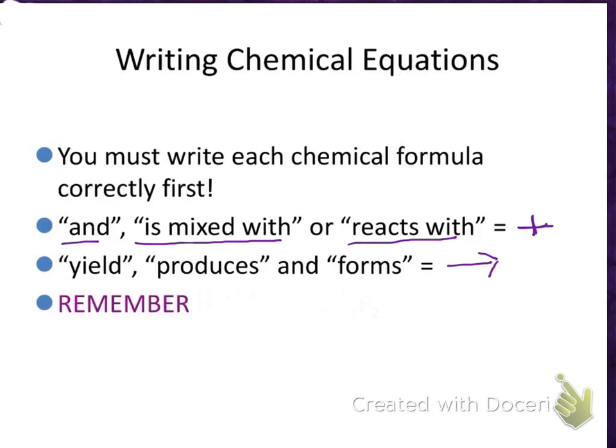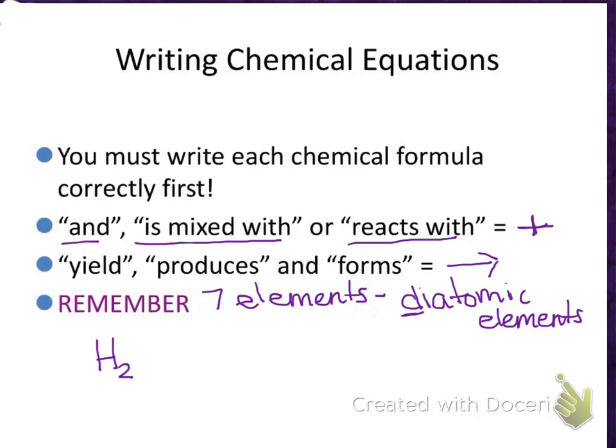Another thing that you need to be familiar with, and we haven't talked about this before, but there are seven elements and when we find those elements naturally occurring in nature, they occur as what we call diatomic elements. And diatomic means two atoms together, that's the way they occur naturally. There are seven of these, and I have a silly way of remembering them, and I'll write them down first. So hydrogen is one...